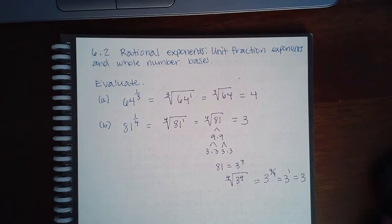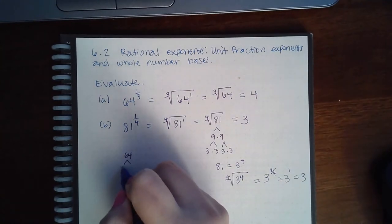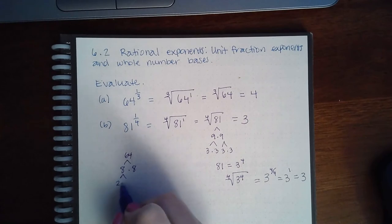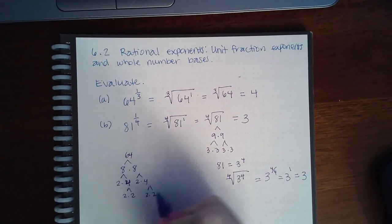Similarly, the same thing can be done for this one. 64 is 8 times 8, which is 2 times 2, or 2 times 4. And then 2 times 2, and 2 times 2.